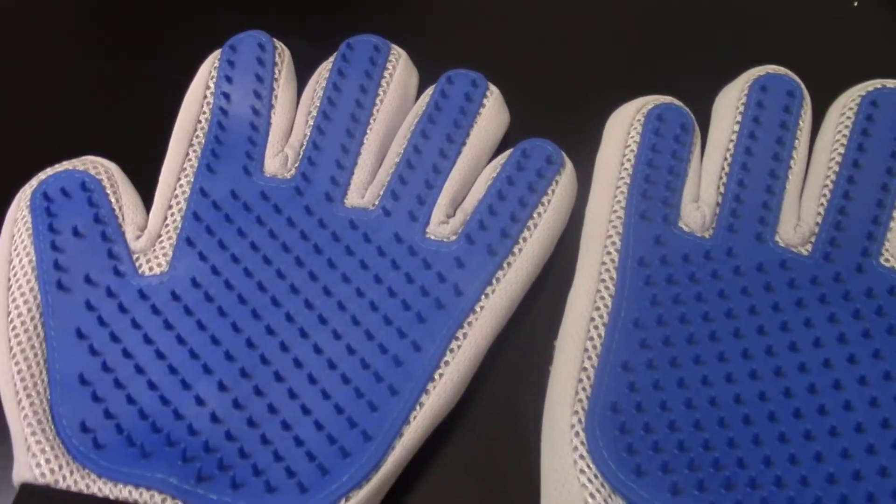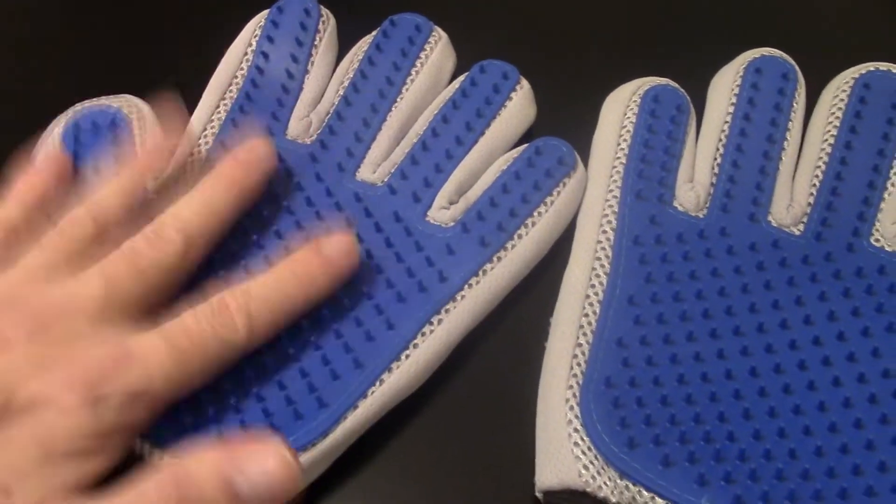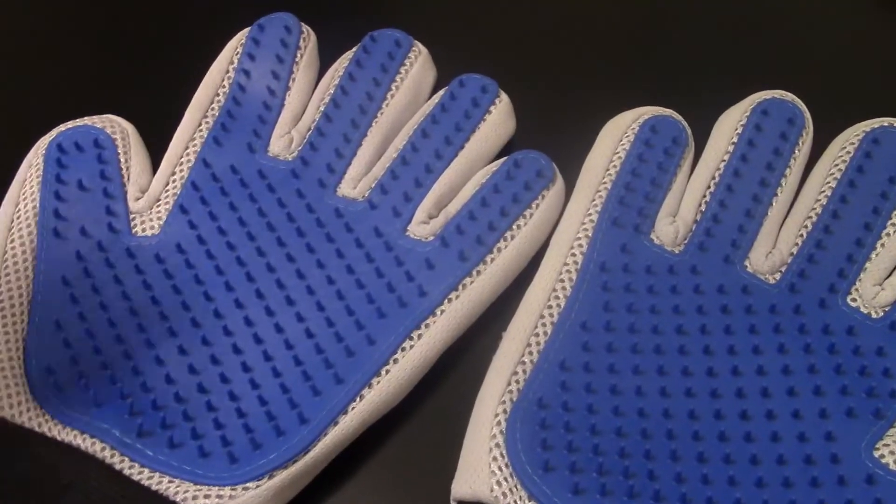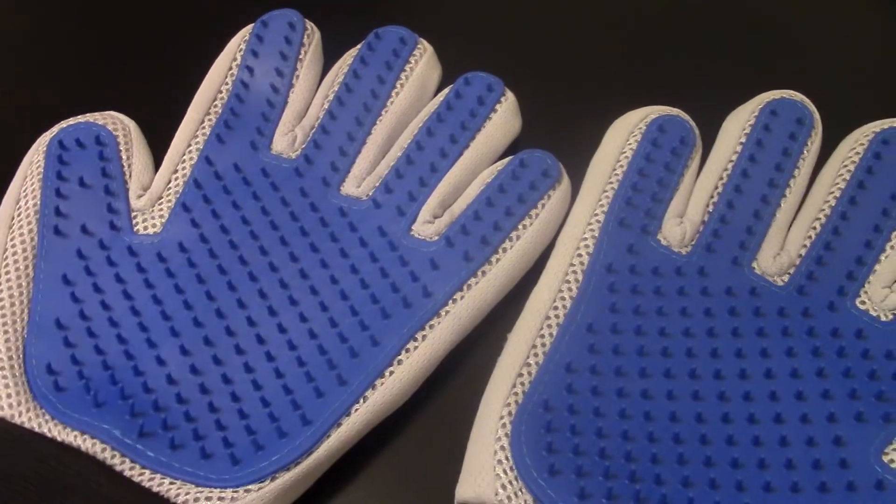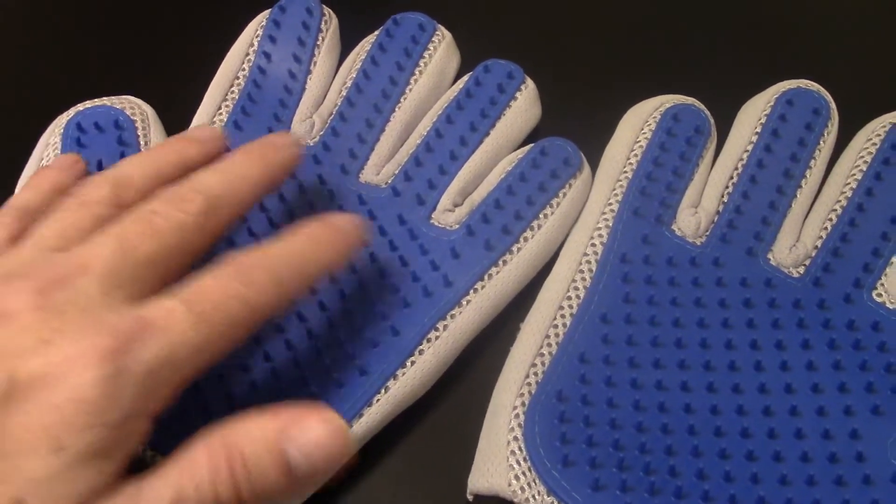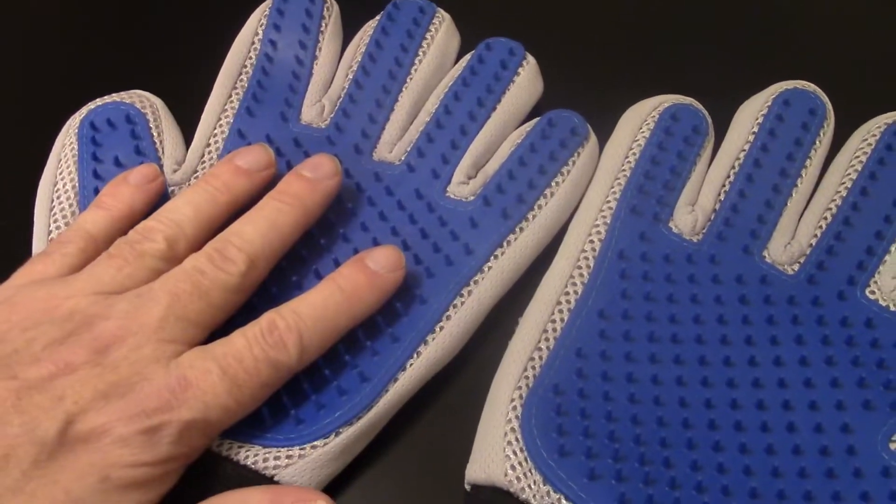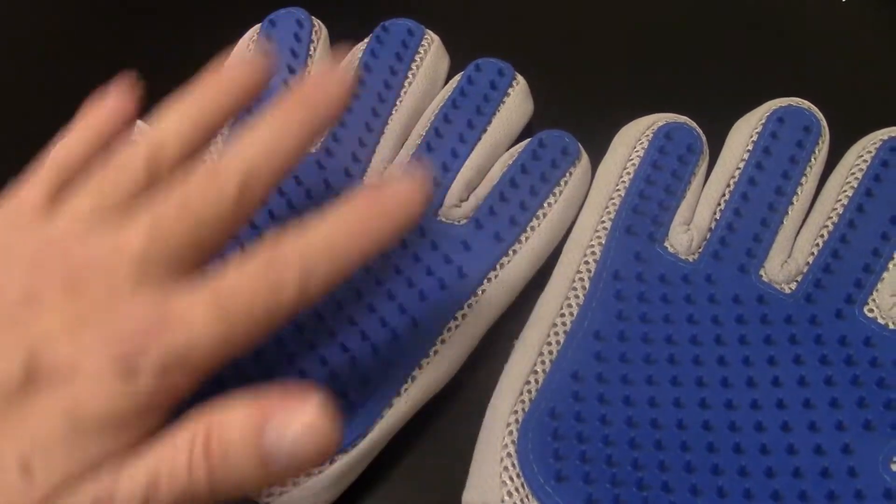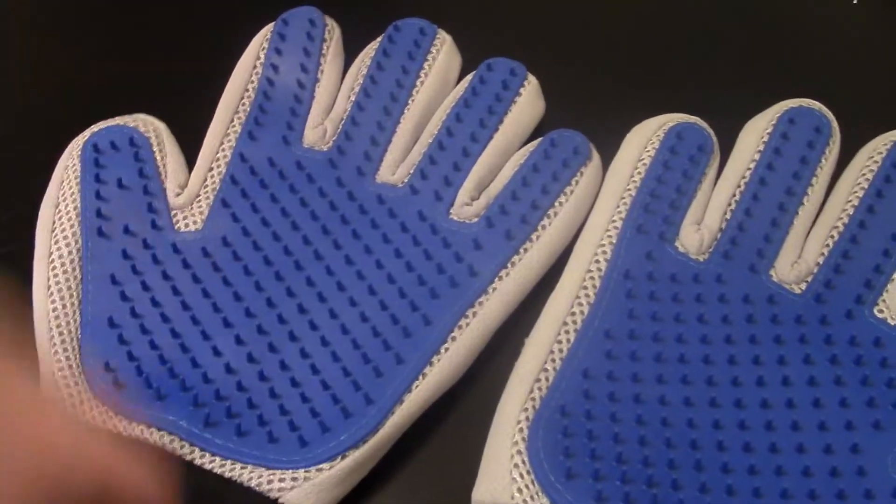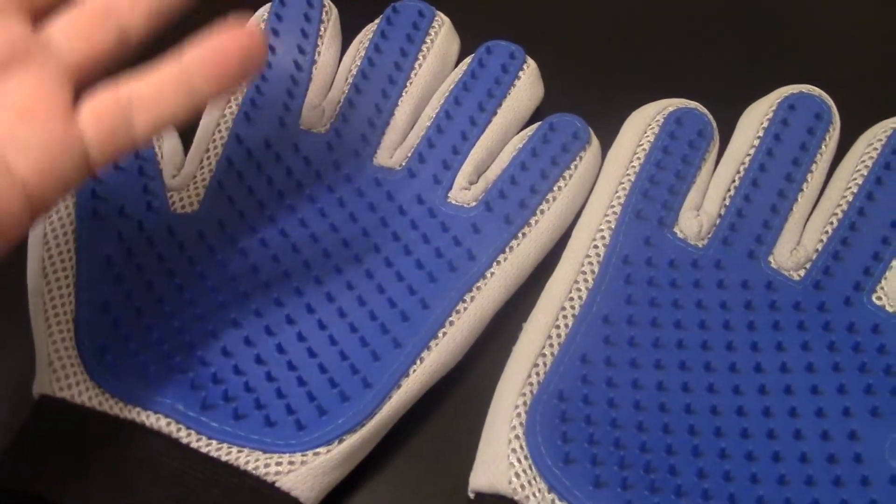Cats especially don't like being brushed. You just put these on and stroke your cat like you normally would, and they don't get offended by it. Doesn't work well with dogs with undercoats. It doesn't really get down in there. You need a rake for a dog like that.